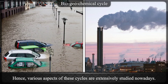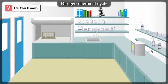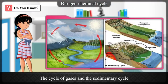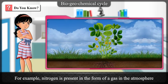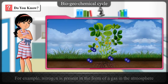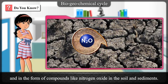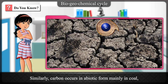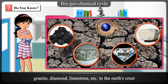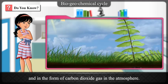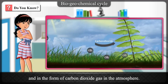Various aspects of these cycles are extensively studied nowadays. The cycle of gases and the sedimentary cycle cannot be completely separated from each other. For example, nitrogen is present in the form of a gas in the atmosphere and in the form of compounds like nitrogen oxide in the soil and sediments. Similarly, carbon occurs in abiotic form mainly in coal, granite, diamond, limestone, etc. in the Earth's crust and in the form of carbon dioxide gas in the atmosphere.